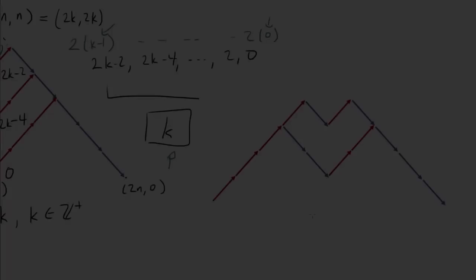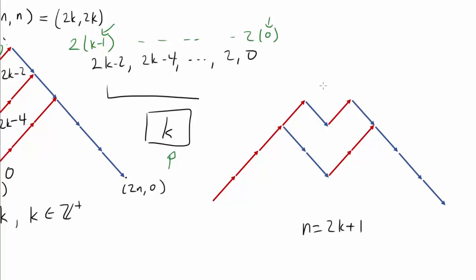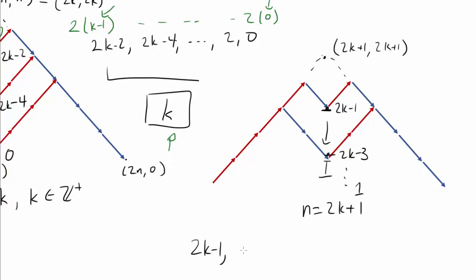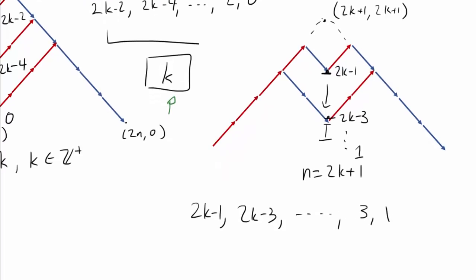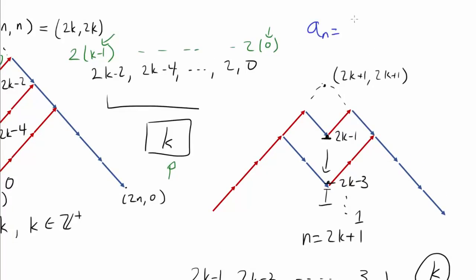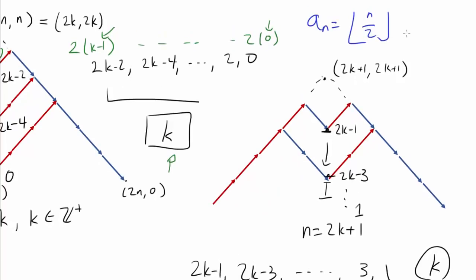Now let's consider the case when N is odd, N equals 2K+1. The midpoint is (2K+1, 2K+1). The possible Y coordinates at the center are 2K-1, 2K-3, ..., 1 — odd positive integers from 1 to 2K-1. The number of such integers is K, so we again have K possibilities. Another way of summarizing this: a_n, the number we want, is equal to floor of N over 2. This formula works when N equals 2K or 2K+1.